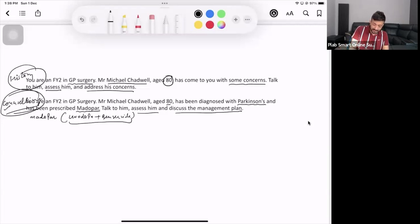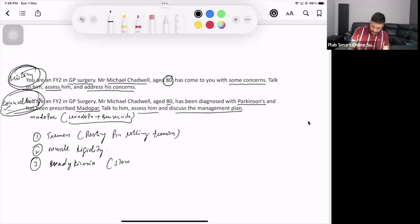Mostly you can expect counseling station because in the history station, it's very difficult for the patient to act as well. Whenever you're having the station on Parkinson's, what are the things you need to check? You need to ask for the symptoms. What are the symptoms you have got? First of all, you have got the tremors in the history. You have got resting, pin rolling tremors. Number two thing that you have to check is muscle rigidity. And number three, third thing that you need to check is bradykinesia. That is slowness in the movement. If you have got these three things, most probably it is Parkinson's.